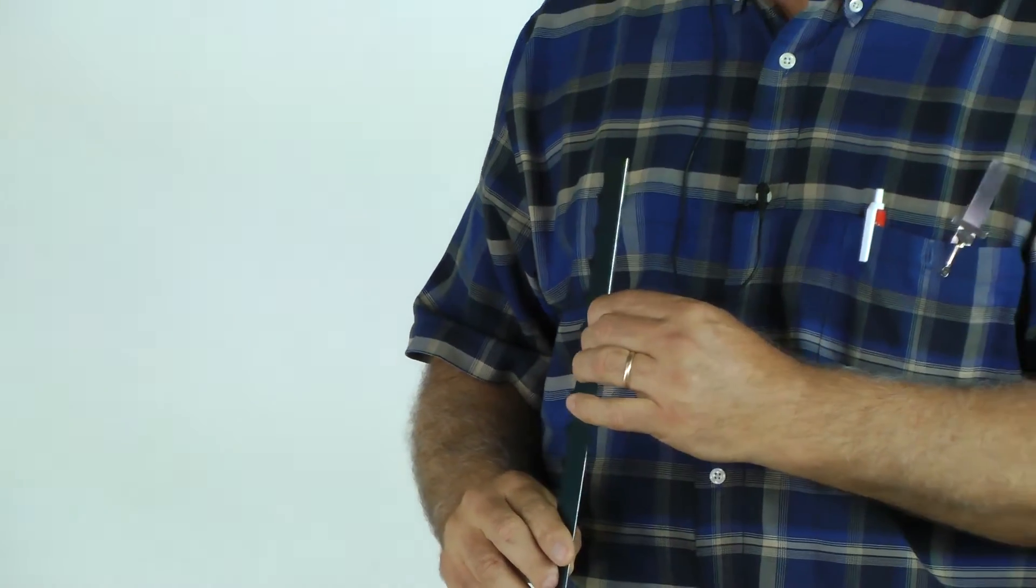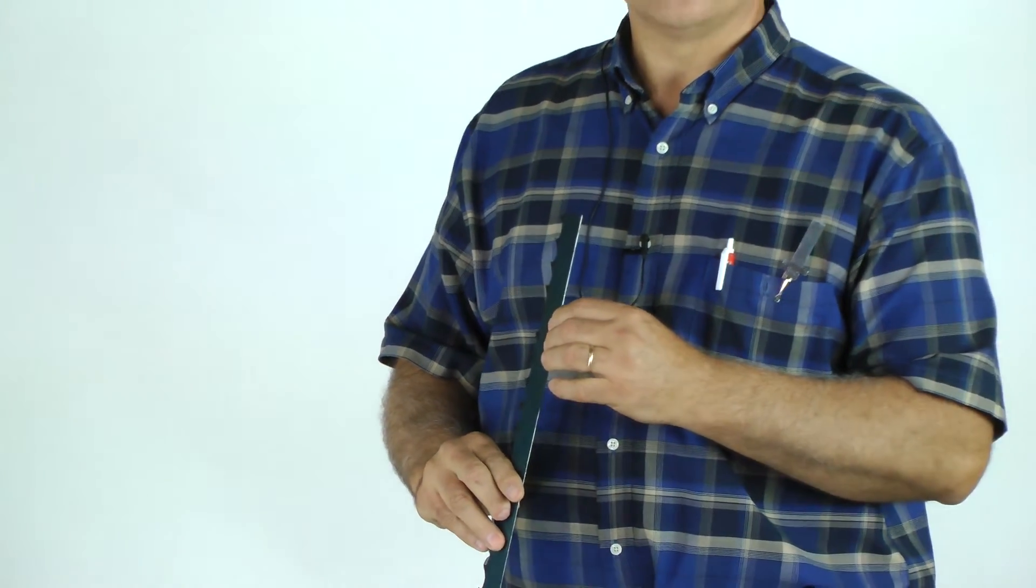Thicknesses of blade. In the resaw industry, very common is the one inch wide blade with 0.35 thickness. That would be 35 thousandths. Inch and a quarter is usually 42 thousandths. Inch and a half, we have 42, 50, and 55 thousandths. Forty-two is common, but usually when people go to an inch and a half blade, they like the 0.50 or 50 thousandths.